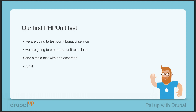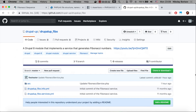In this video we're going to be creating our first PHP unit test. We're going to test our Fibonacci service, and in order to do that we're going to create our unit test class, create one simple test with one assertion, and run it. Here is our Drupal module with a simple service that is generating the Fibonacci numbers.